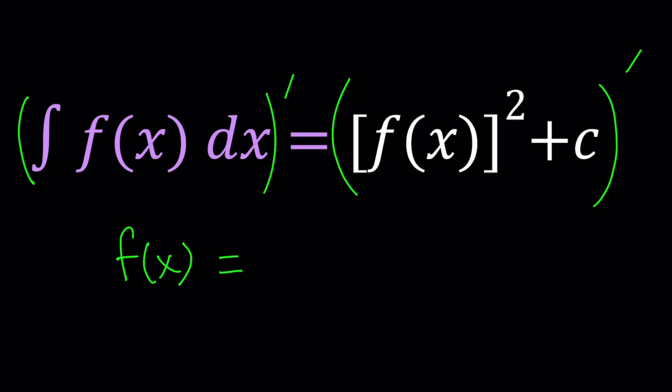When you differentiate something squared, you have to use the power rule. So bring the two down, reduce the power of f(x) to one, and then multiply by the chain rule. Multiply by the derivative of the inside, which is f prime. The derivative of a constant is always zero, so it just disappears.